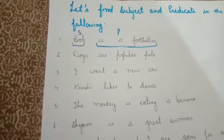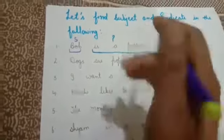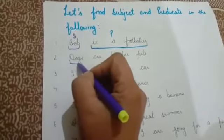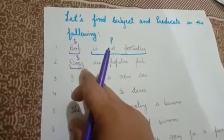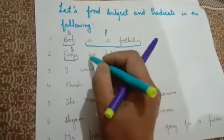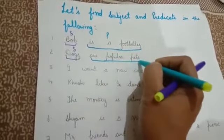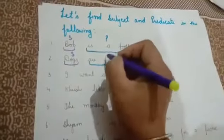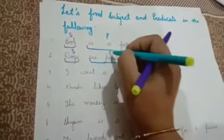'Dogs are popular pets.' Here we are talking about dogs. So 'dogs' is the subject, and 'are popular pets' is the predicate.